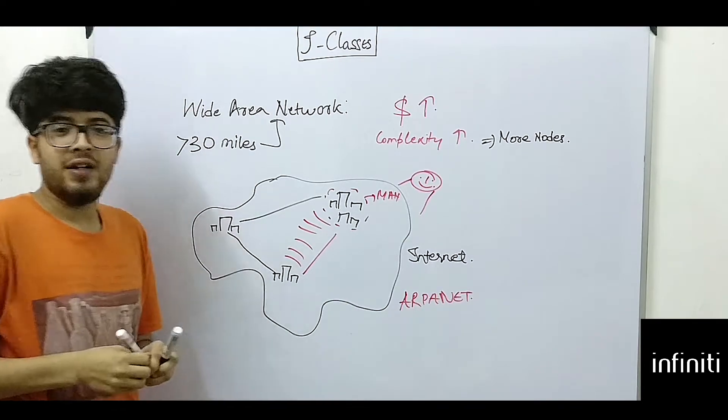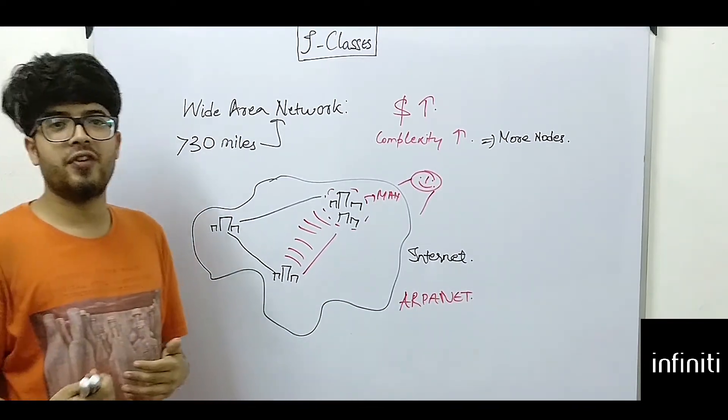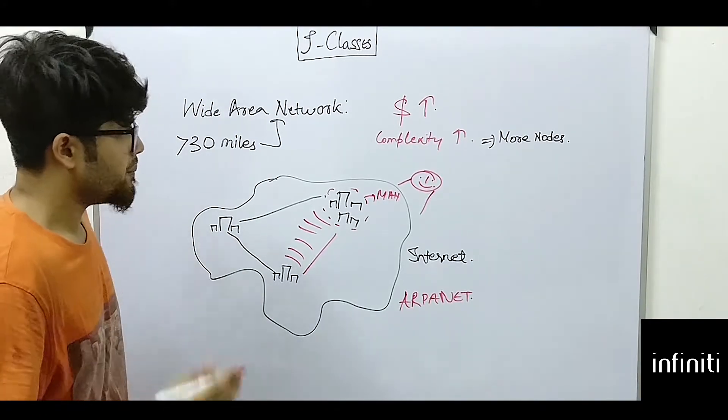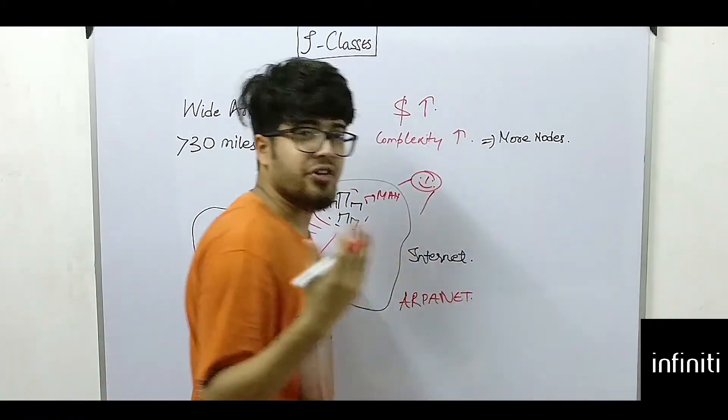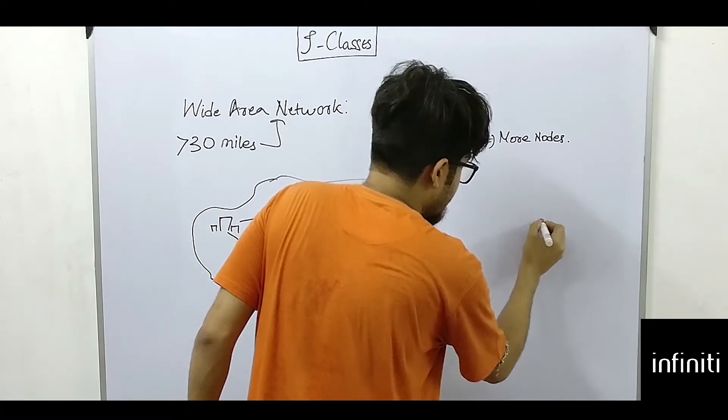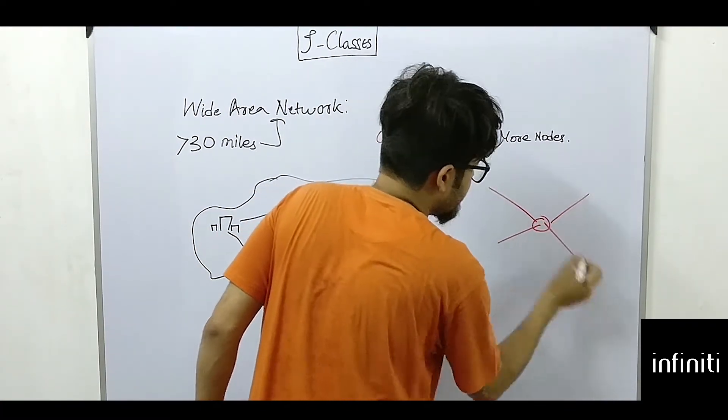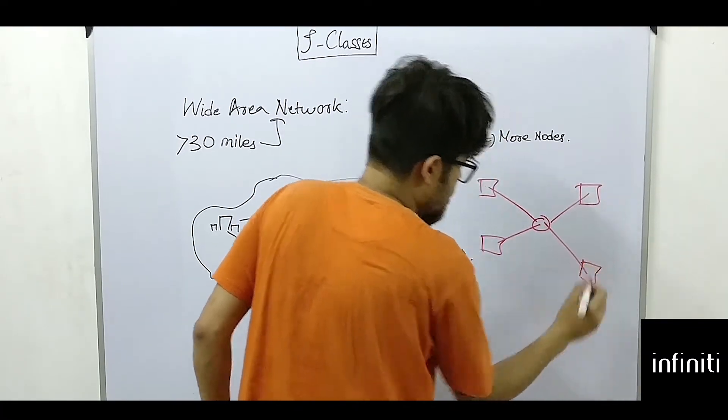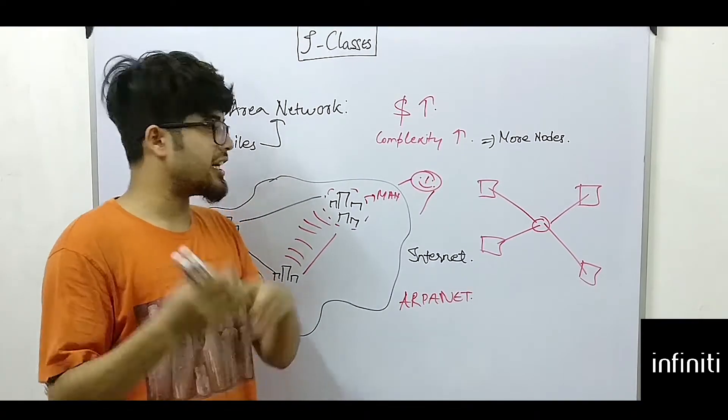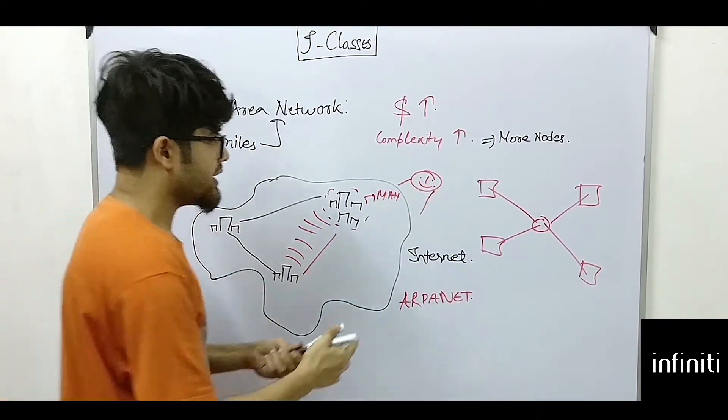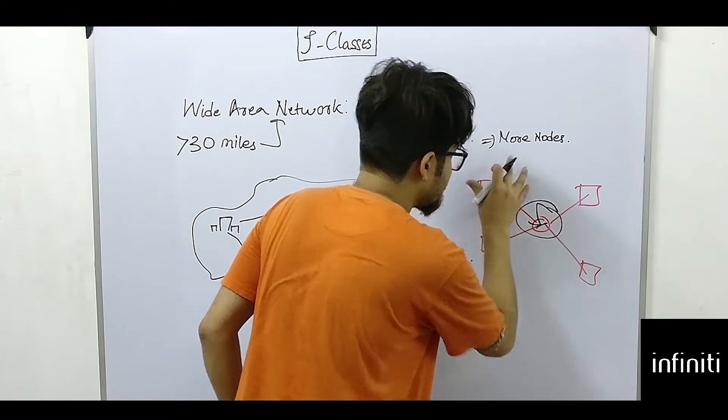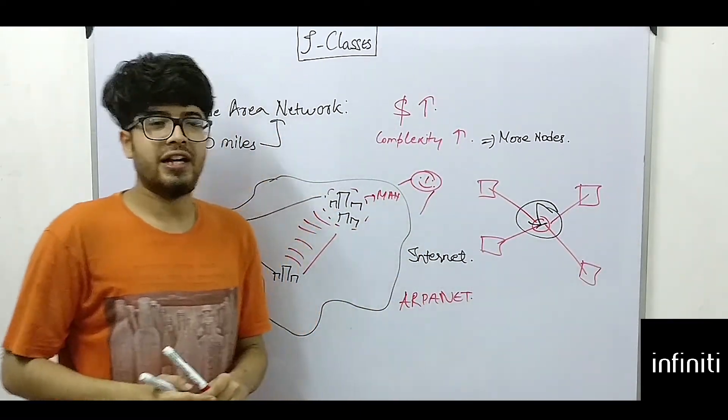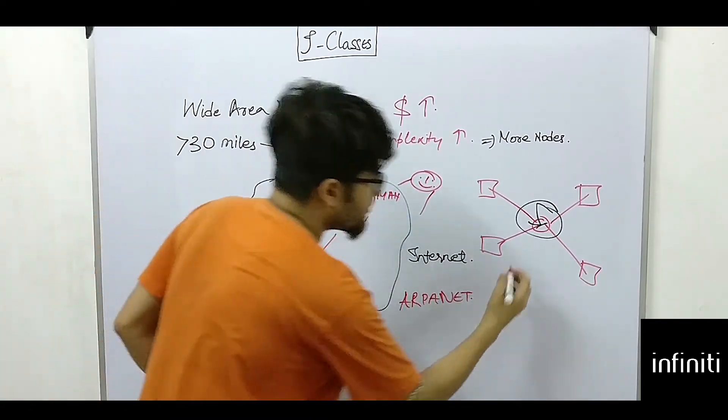During World War, America developed, that is the Ministry of Defense of America developed a network because earlier it used to be a non-distributive type of network. So there will be a central node which will be catered to different devices connected in a network. So if a bomb falls on a certain area of America, then this server may get lost and these nodes that are connecting through a network get disrupted.